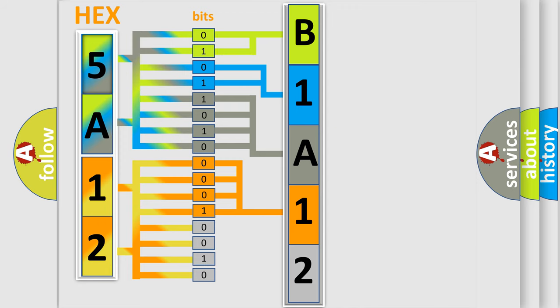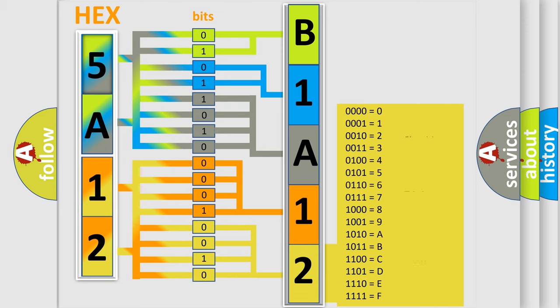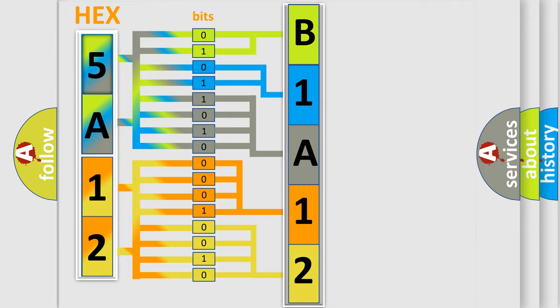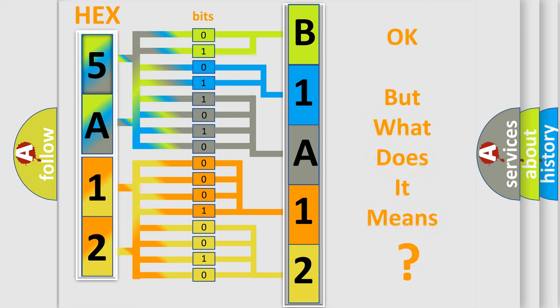A single byte conceals 256 possible combinations. We now know in what way the diagnostic tool translates the received information into a more comprehensible format. The number itself does not make sense to us if we cannot assign information about what it actually expresses.